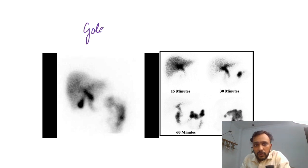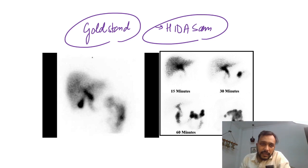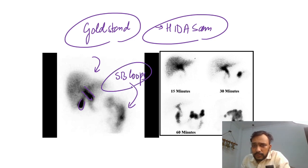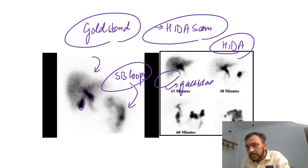The gold standard imaging for cholecystitis is the HIDA scan. In a normal HIDA scan you are going to see the biliary radicals, the gallbladder, and contrast in the small bowel loops. But if you do a HIDA scan in a patient with acute cholecystitis, you will see that the gallbladder is not visualized.